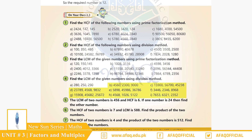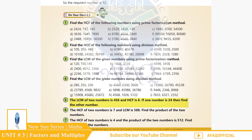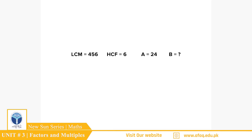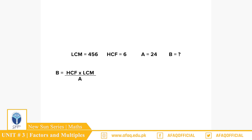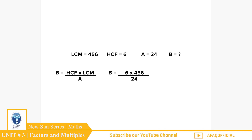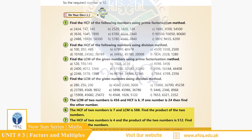Question 5: The LCM of two numbers is 456 and HCF is 6. If one number is 24, find the other number. جیسا کہ ہم نے پڑھا: a × b = HCF × LCM۔ یہاں LCM = 456، HCF = 6، a = 24 — تو b = (HCF × LCM) ÷ a = (6 × 456) ÷ 24 = 114۔